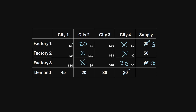With city two's demand met, those remaining cells are crossed out. Looking at remaining cells, the next lowest shipping cost is $8, corresponding to city one, which has a total demand of 45. Factory one has 15 units of supply left, so we use all 15 units on this route. We cross out factory one's supply and reduce city one's remaining demand from 45 to 30.